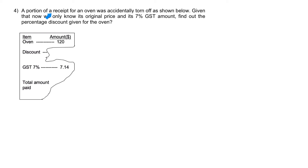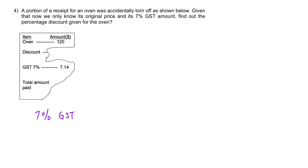Question 4. A portion of a receipt for an oven was accidentally torn off. Given that we only know its original price, which is $120, and its 7% GST amount, which is $7.14, find the percentage discount given for the oven. We shall start with the GST. Remember, GST is only calculated based on the final amount. In this case, $120 is not the final amount because there is a discount given. Hence, the 7% has to be calculated based on the discounted price. So we know 7% GST is equal to $7.14.